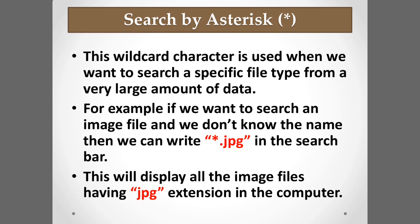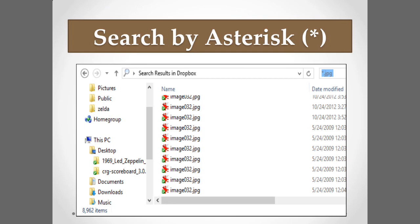The next searching method is the asterisk (*). The asterisk is used when you want to find a specific file from a large amount of data. For example, if you want to find all image files with a .jpg extension on your computer, type *.jpg and press Enter. It will display all image files with the .jpg extension on your screen, making it easy to find the file you need.